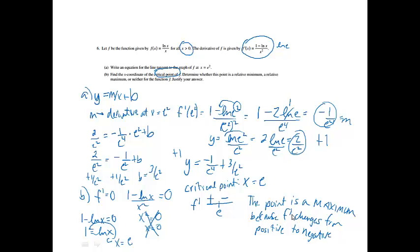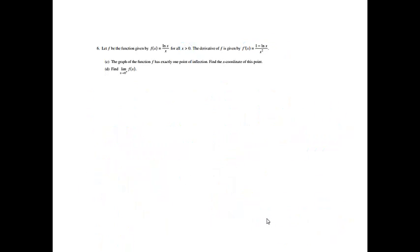That part was worth three points: one for finding the critical point x equals e, one for identifying it as a maximum, and one for the justification. Part C: the graph of f has exactly one point of inflection — find the x-coordinate of this point. To get a point of inflection, we'll find f double prime and where it changes sign.